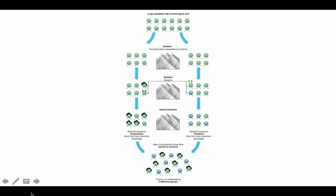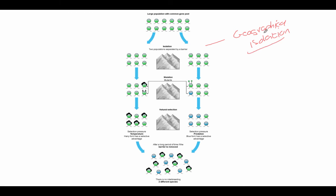The last thing I want to go through is something called speciation. What is speciation? If you look at the picture, you start off with a large population with a common gene pool — these organisms are all related, all the same species. What can happen is they get split up — one group goes one way, one group goes the other way. There's a name for that: geographical isolation. Learn that. Speciation is usually caused by geographical isolation.